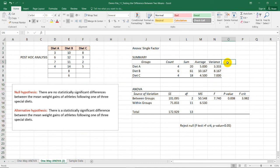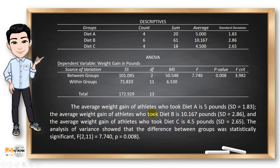And before I forget, let's compute for the standard deviation of each data using the formula square root of the variance here. And we have these three standard deviations for each group. Here's the report and summary of our results. We can see here that the average weight gain of the athletes who took diet A is 5 pounds and so on. The 2 degrees of freedom came from the between groups and 11 came from the within groups degrees of freedom. The F-test value is 7.74 and the p-value is 0.008.